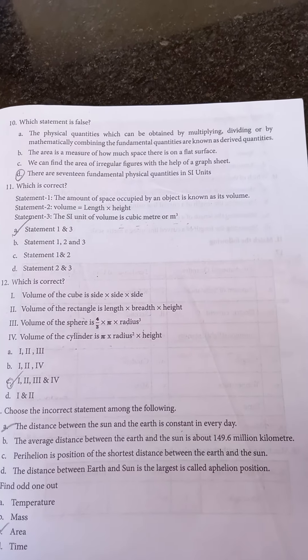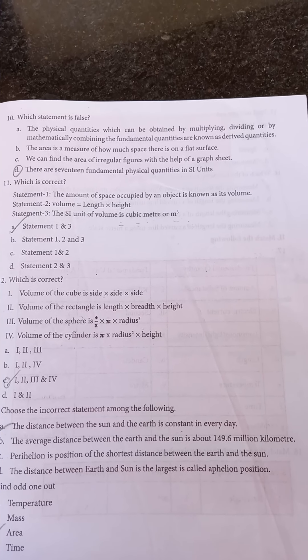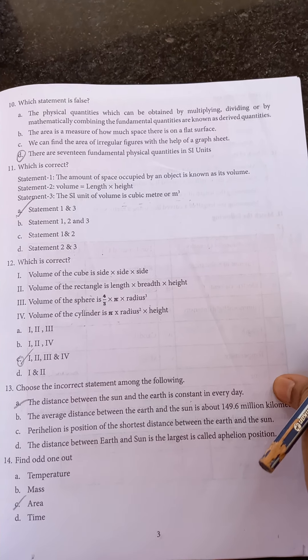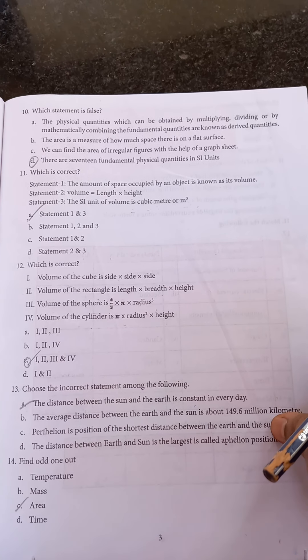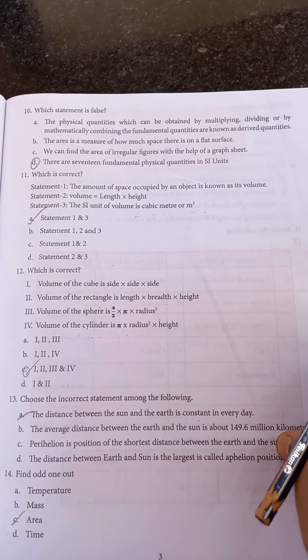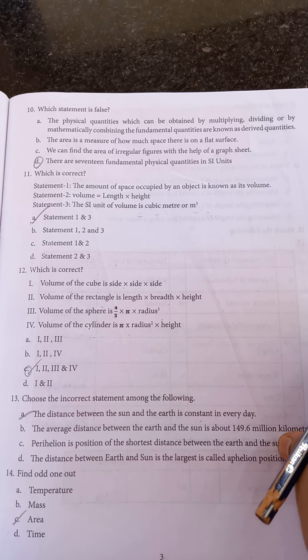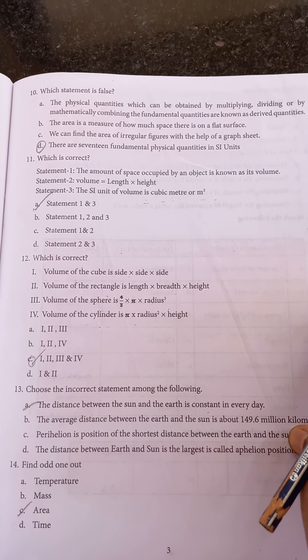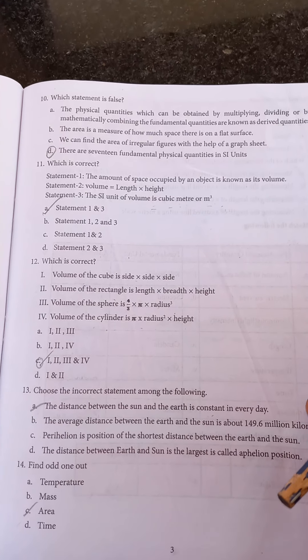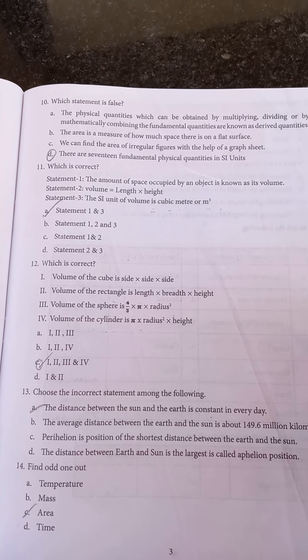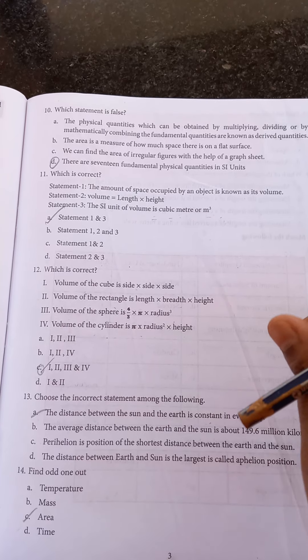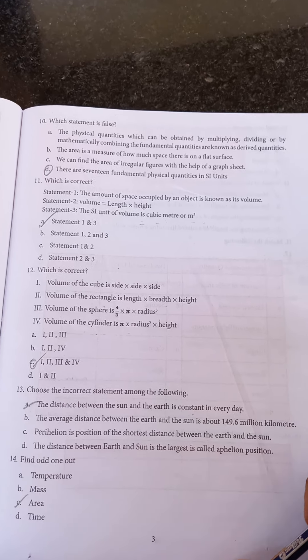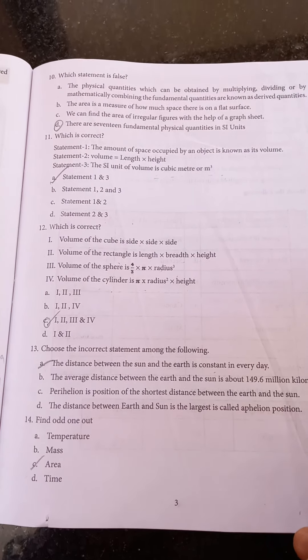Which statement is false? The answer is there are 17 fundamental physical quantities in SI units. Option D is the false statement. Which is correct statement? 1 and 3 is correct, option A is correct. 12th question: which is correct? There are four statements given. Four statements are correct, so the answer is option C: 1, 2, 3, and 4.